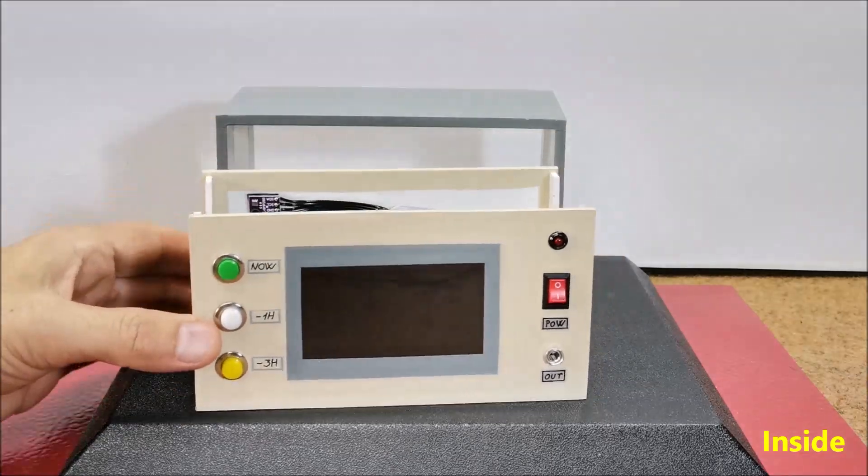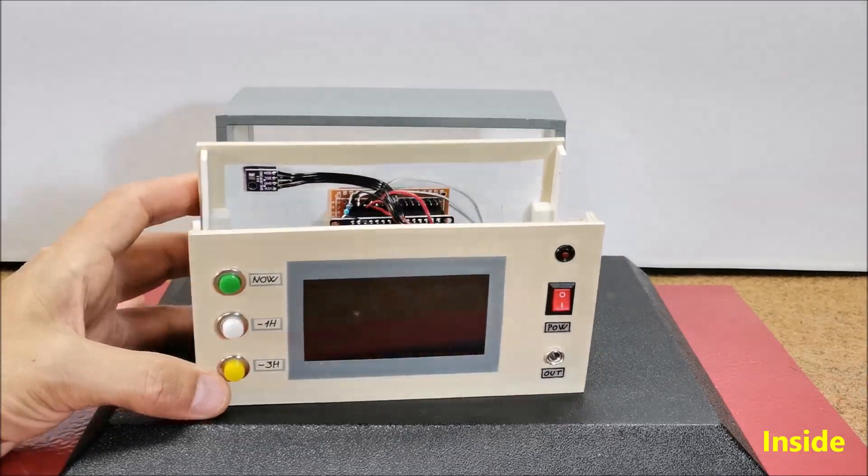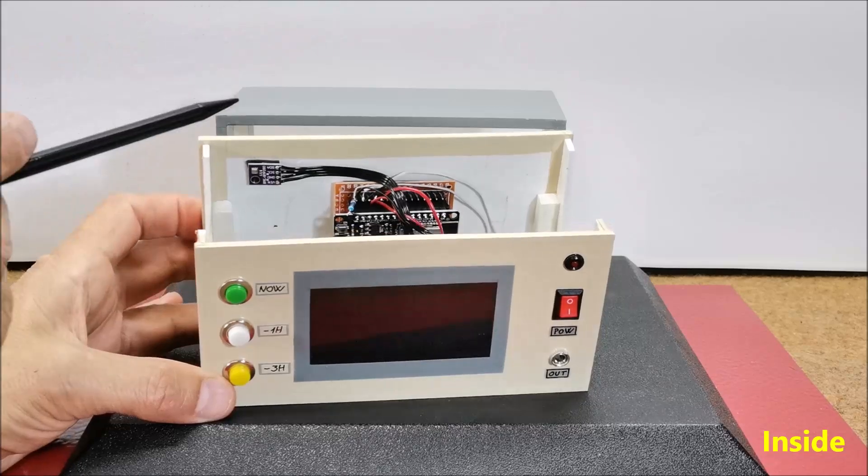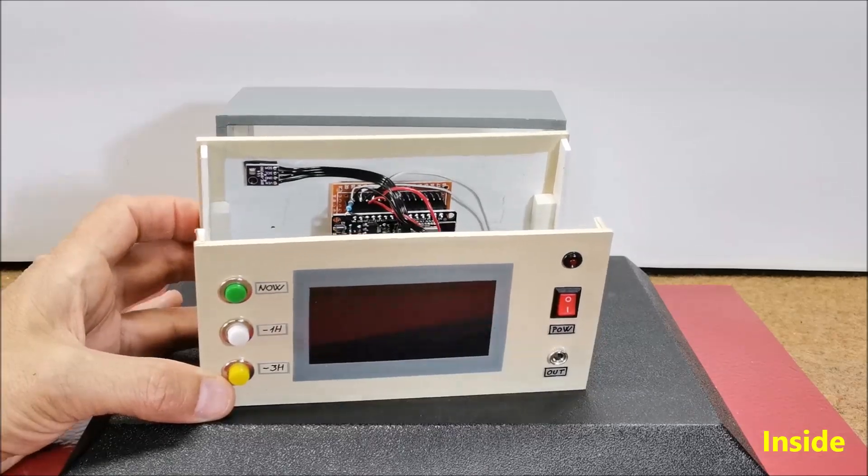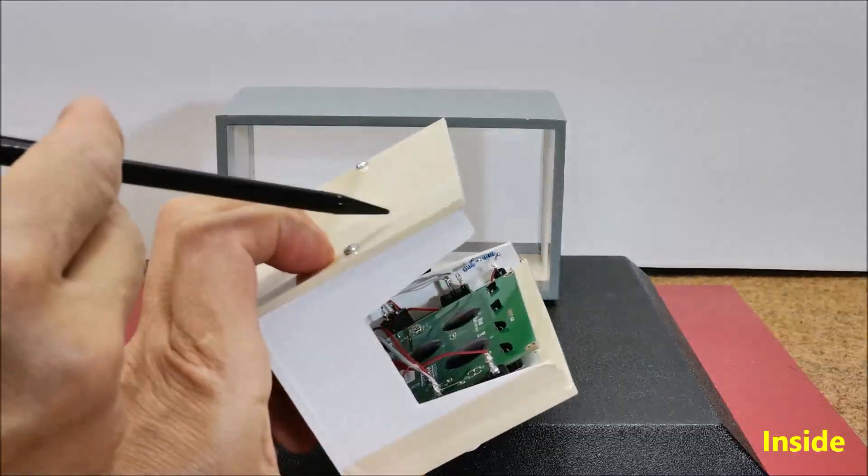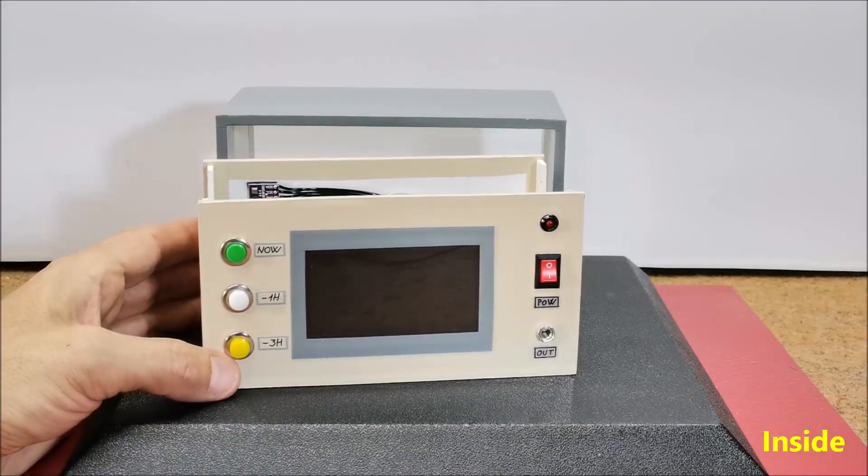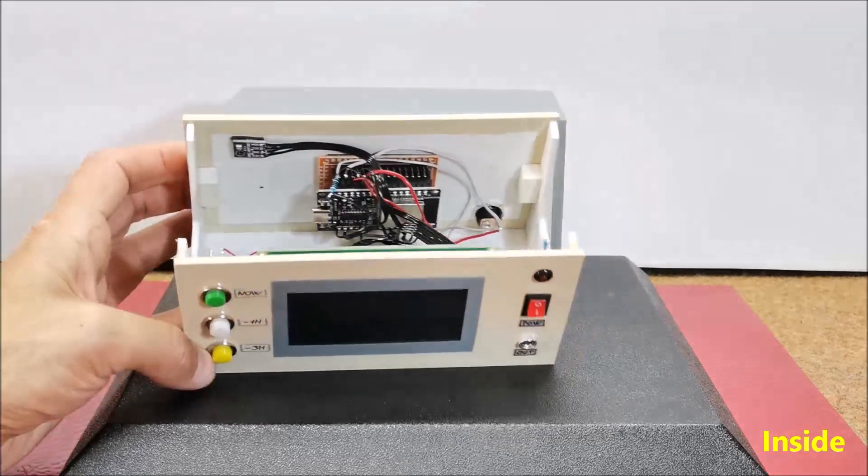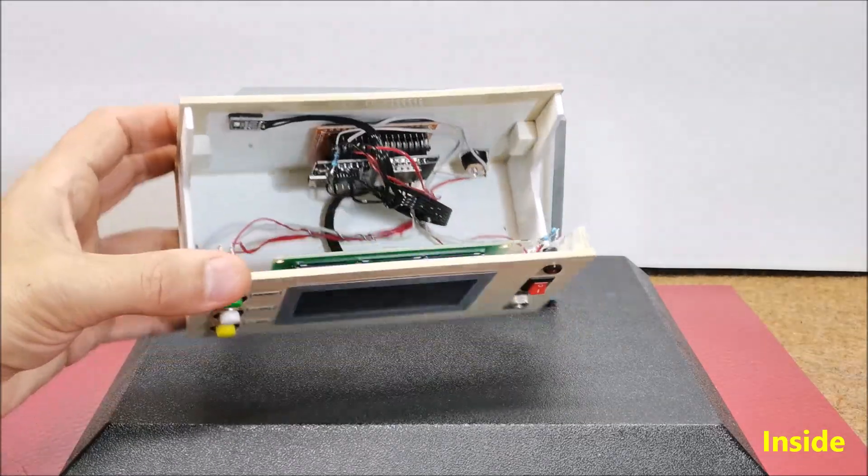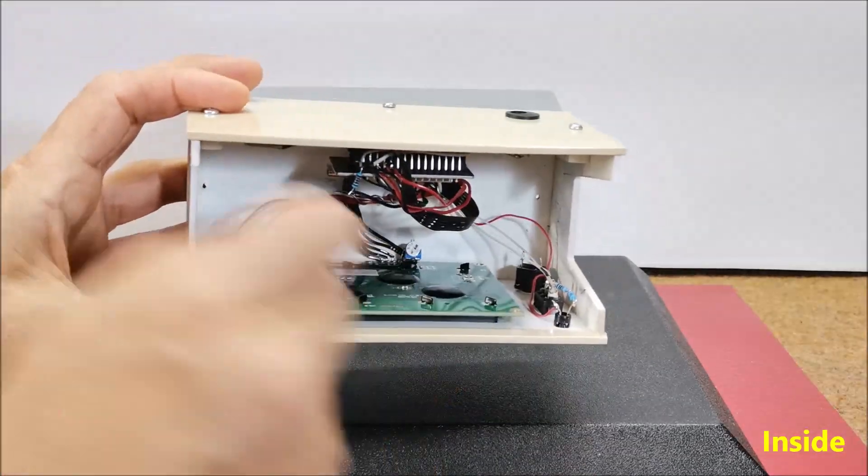For a more accurate display of temperature and humidity, it is desirable to place the sensor module outside the housing or to make more ventilation holes. The contrast of the display is adjusted using a small trimmer potentiometer.